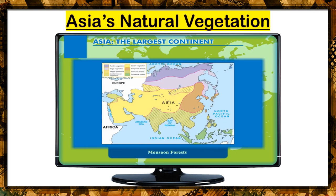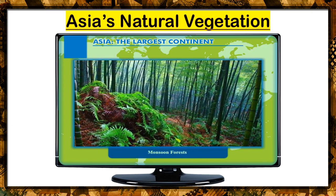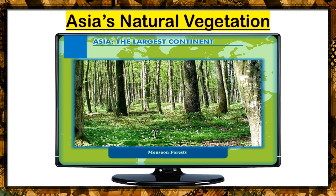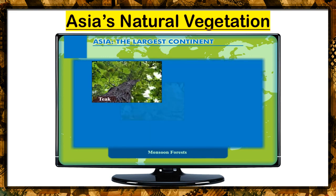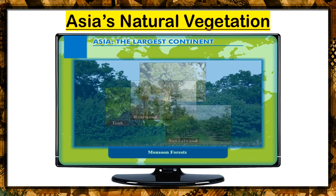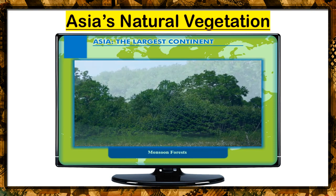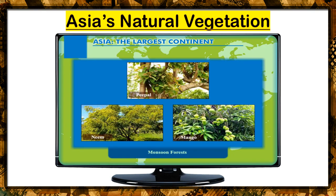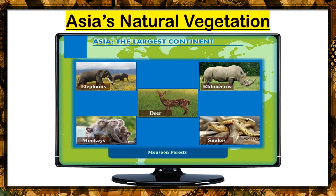Monsoon forests are found in the monsoon lands and vary based on the amount of rainfall and the elevation above mean sea level. Mostly the trees are deciduous and shed their leaves during the dry winter season. In areas where rainfall is heavy, dense growth of trees like teak, sal, rosewood, and sandalwood can be seen. Acacia, thorn bushes, and short grasses grow where rainfall is scanty. In delta regions and coastal lands, mangrove forests are found. Peepal, neem, and mango are some common trees of this group. Elephants, monkeys, rhinoceros, snakes, deer, and a variety of animals are found here.